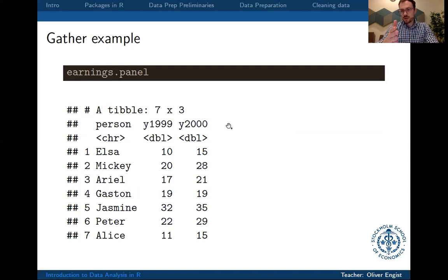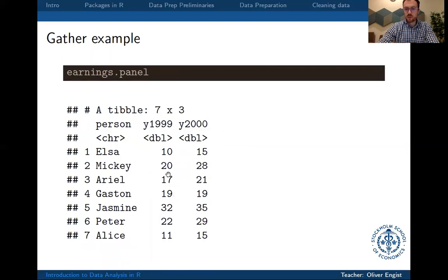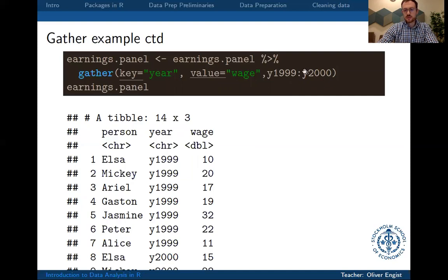And then we want to have, of course, an additional column that tells us in which year we actually are. So what we're doing is we use the function gather, so we also use pipe to feed the data into the function. Then we say key, basically give us a new column that tells us in which year we are. Value is just take the value that was stored in these two columns and then we tell gather that we want to have year 1999 and year 2000, these two columns that should now be basically split up over several rows.